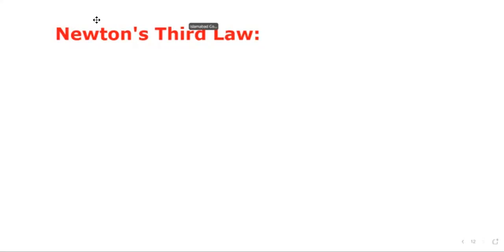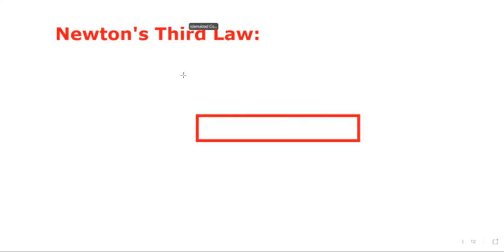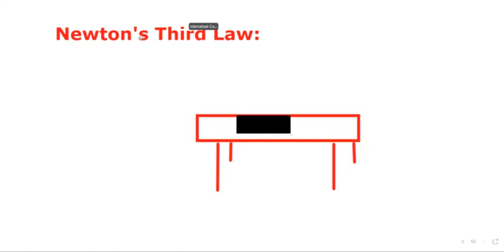Let's start with Newton's third law. Let us assume that we have a table like this — suppose we have a table like this, and there is a book lying on it. From previous lectures we know that...